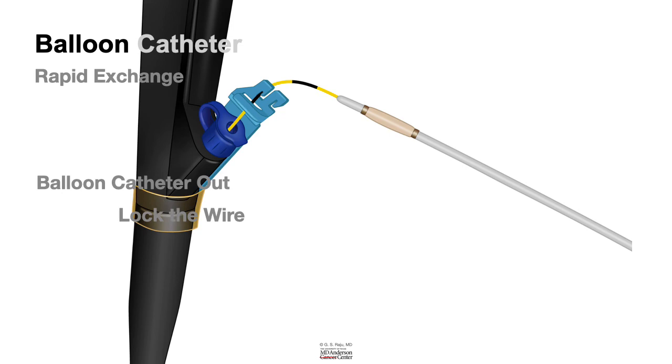Before you pull the catheter out, what you do is you hold the wire there at the mark. That gives you two securities: one, the locking device has locked the wire, and your hand holding the wire will give you additional security.